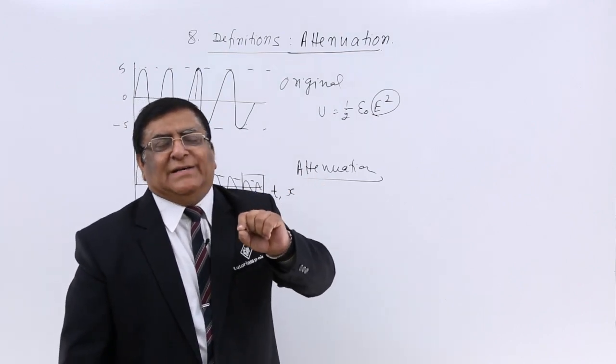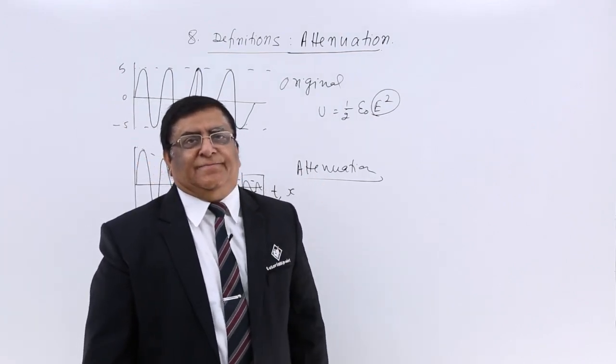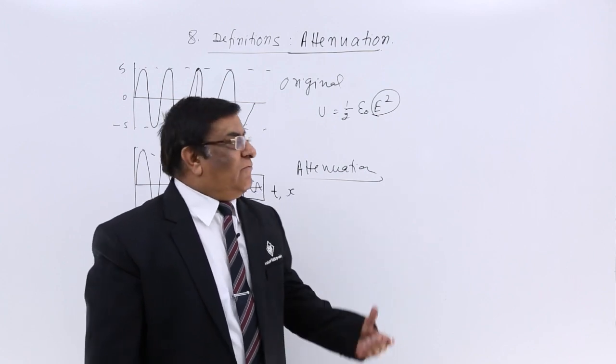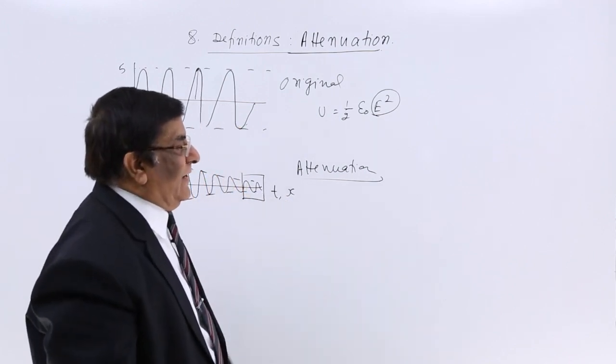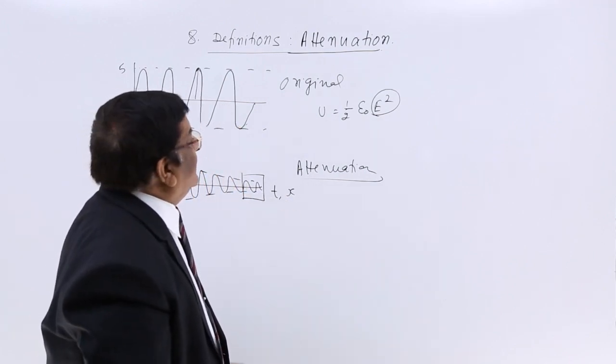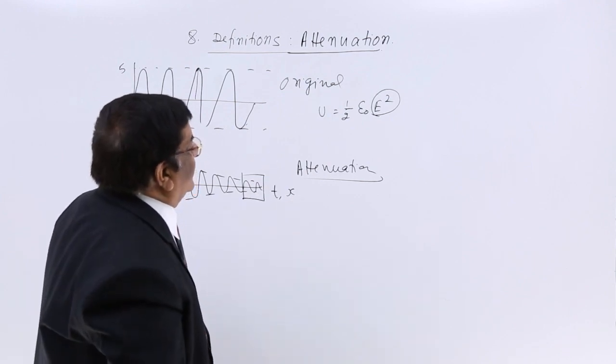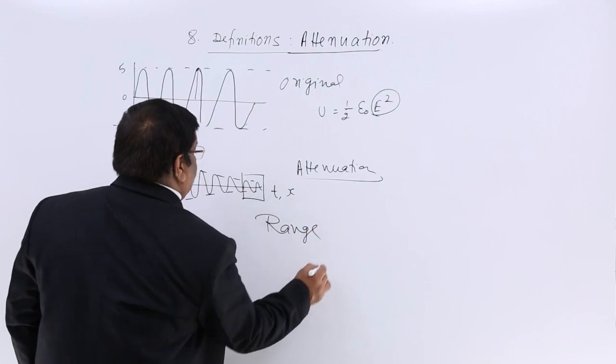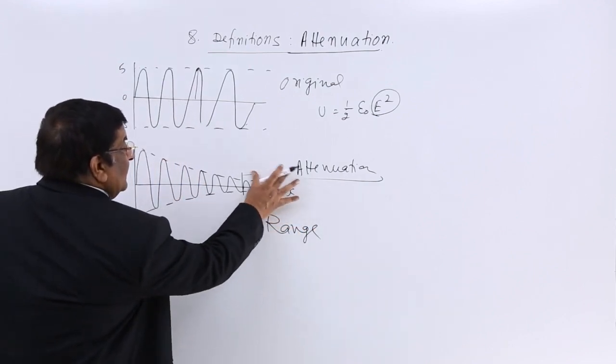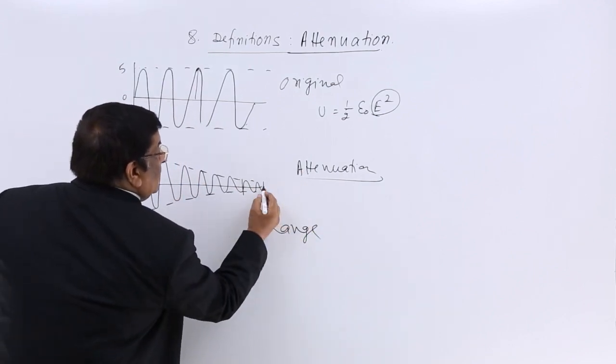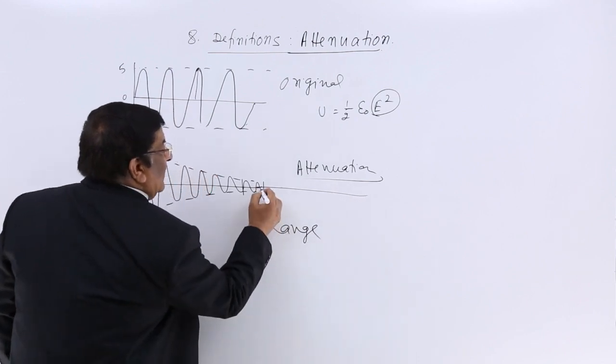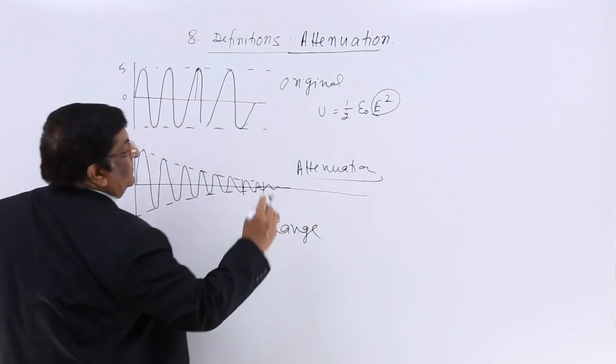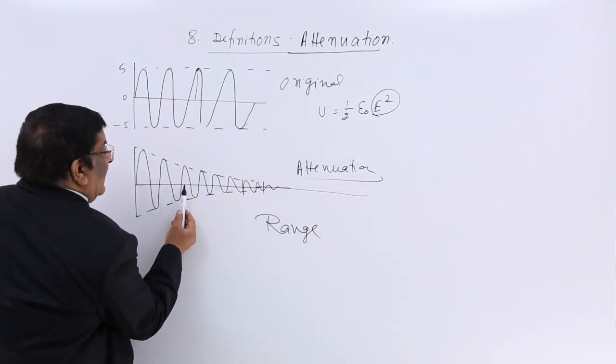So attenuation basically means getting weak. Then it will require another amplifier. We will come to that. The next thing we are going to study is range. If we extend this graph, here I have my mobile, I am getting the signal.